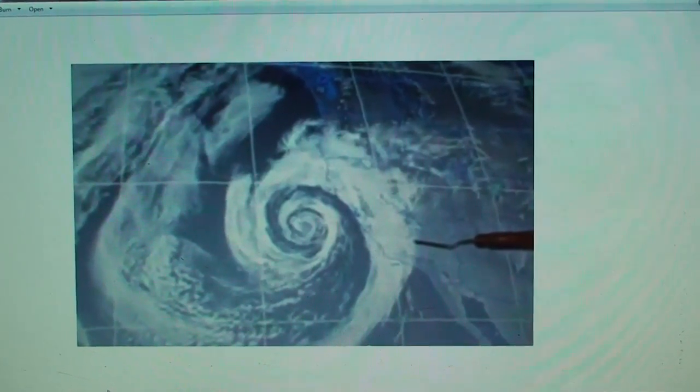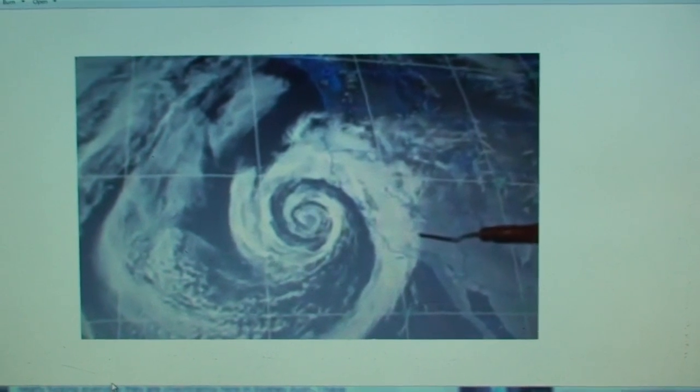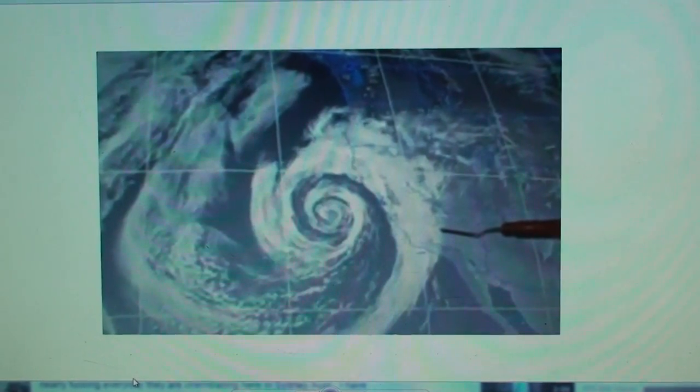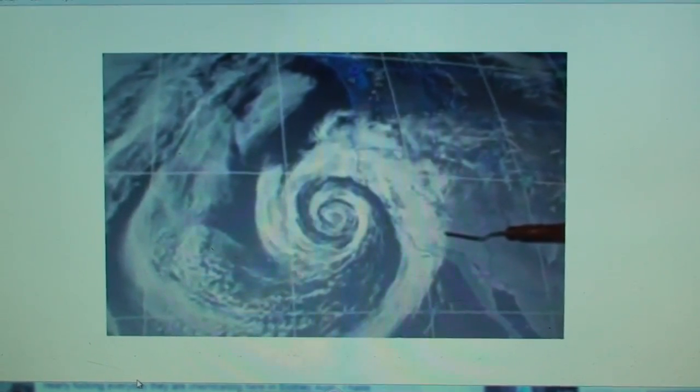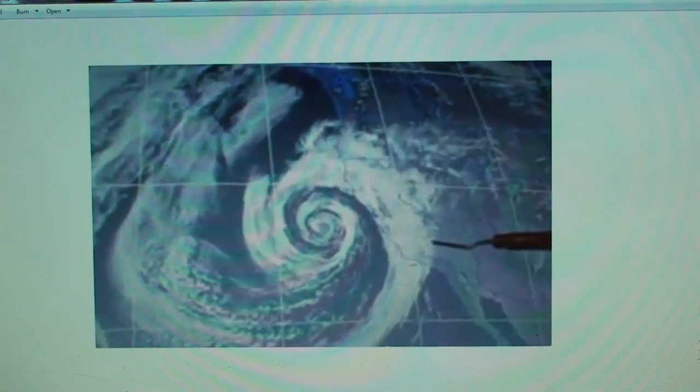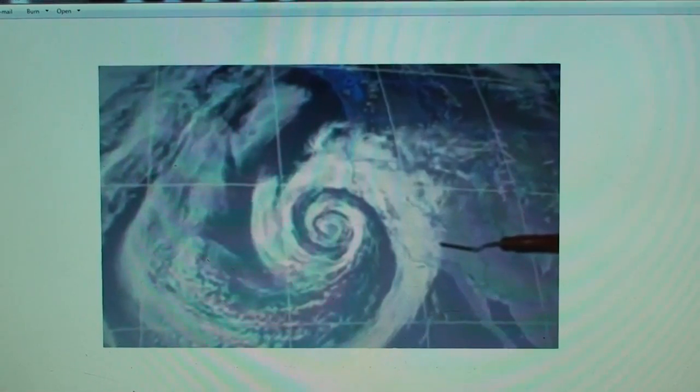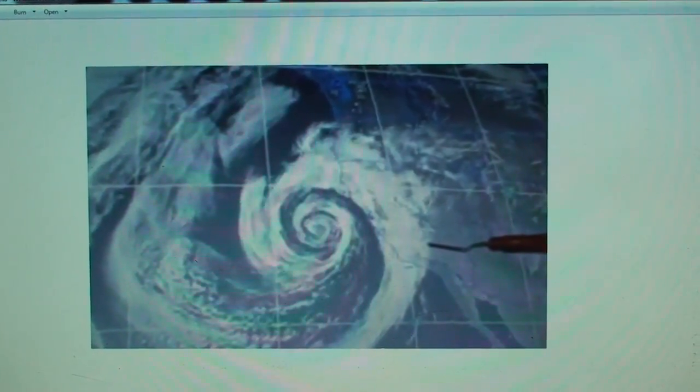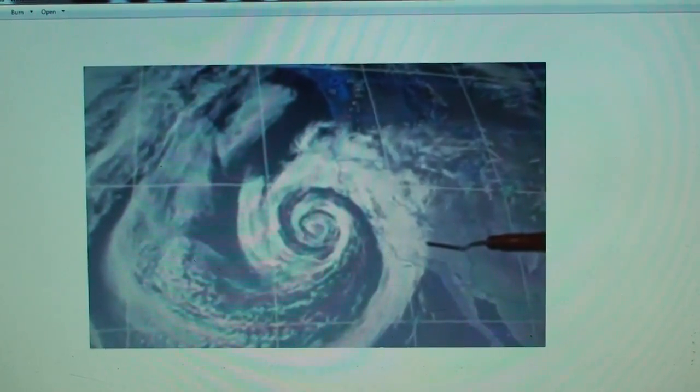Look at my past video about Corexit being in the rain out here in California. I saw it on the hood of my car. It's oily, it's red, these are red residues and very oily. I guarantee you it's Corexit.